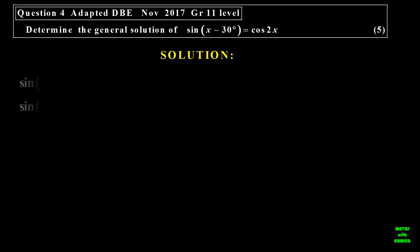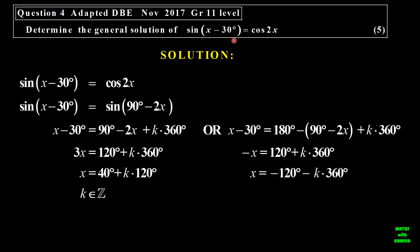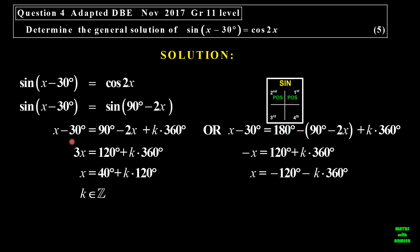Let's look at question number four. We have sine of (x minus 30) is equal to cosine of 2x. I use a co-ratio so I can change the cosine to sine using 90: sine of (90 minus x). The ratios are the same. Where is sine positive? Sine is positive in the first and the second. So for the first, I put the angle on the left side: x minus 30 equal to 90 minus 2x. Because I want a general solution, I'll add the generating term. We then solve for x. That becomes 3x. 90 plus 30 is 120. We divide everything by 3. And x is equal to 40 degrees plus 120k. And k is an element of the integers.